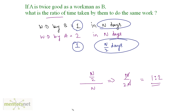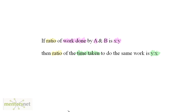This leads us to a conclusion or law. If the ratio of work done by A and B is x : y, then the ratio of time taken to do the same work is the reciprocal or inverse of this ratio. So if the ratio of work done is x : y, then the time taken will be y : x.